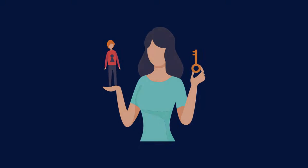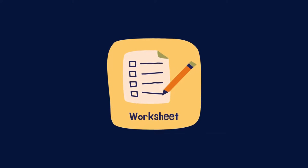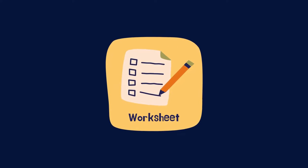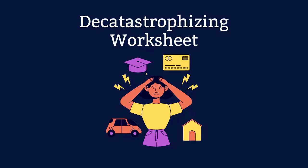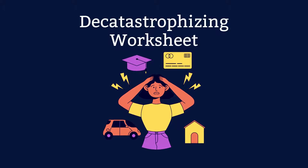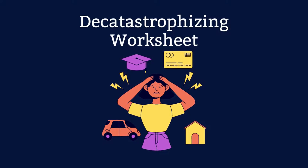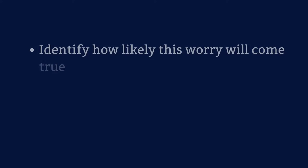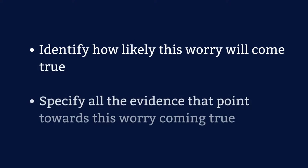Cognitive Behavioural Therapy also relies on worksheets so clients can practice the skills they have learned. Here are some examples of worksheets you can use. The de-catastrophising worksheet normally asks the client to reflect on their biggest worry at the time, using prompts such as identifying how likely this worry will come true and specifying all the evidence that points towards this worry coming true.